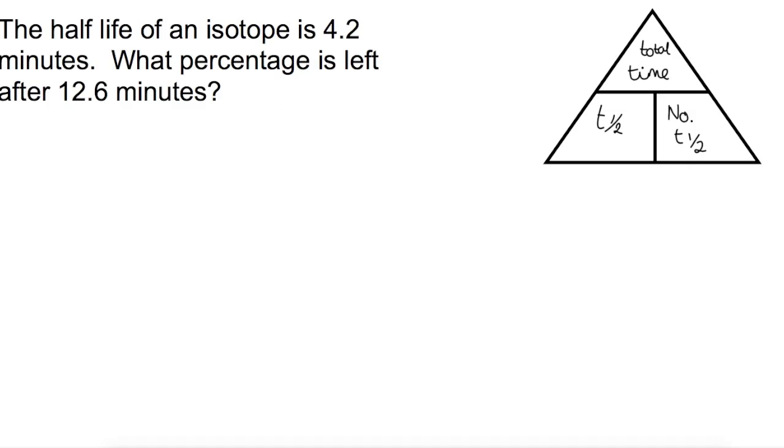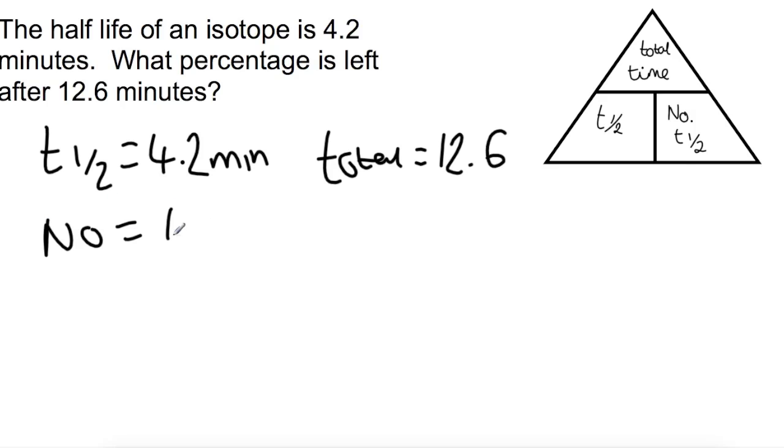Looking at another example here, we have an isotope with a half-life of 4.2 minutes, which is quite a short half-life. And we're looking at what percentage is left after 12.6 minutes. So in this, we have a total time of 12.6. So we need to work out how many half-lives that is. So your number of half-lives will be 12.6 divided by 4.2. So you'll have three half-lives.